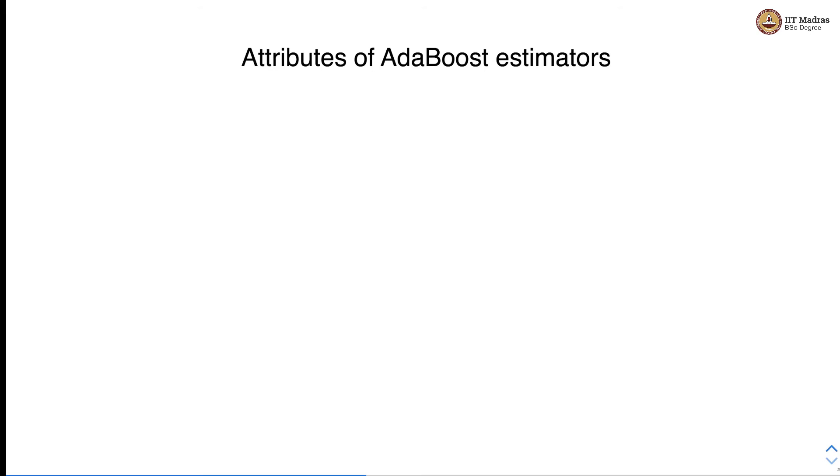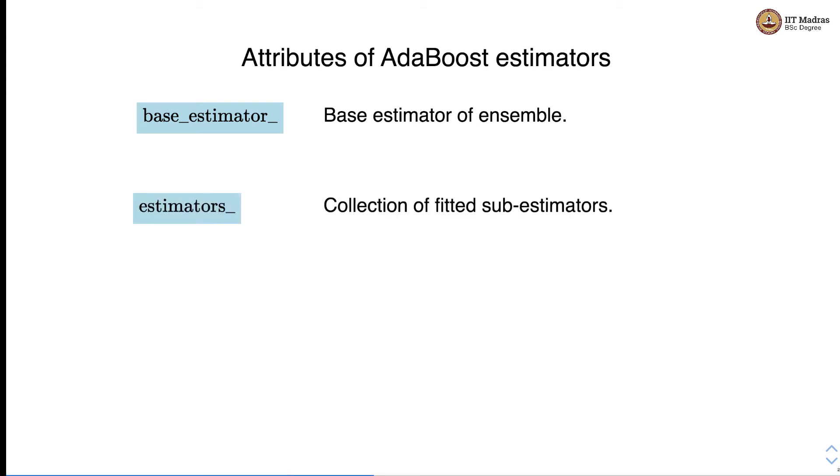Let's look at attributes of AdaBoost estimators. There is an attribute which is base_estimator_ that provides base estimator of the ensemble. estimators_ is a collection of fitted sub estimators. Then estimator_weights_ provides the weights of each estimator in the ensemble and estimator_errors_ provides errors of each estimator in ensemble.